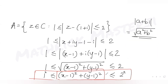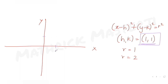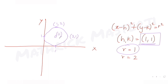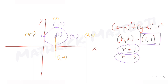Both circles have the same center (1, 1), so these are concentric circles. Plotting the center at (1, 1), the inner circle of radius 1 passes through (2, 1) and (1, 0). The outer circle of radius 2 passes through (1, -1), (1, 3), (3, 1), and (-1, 1), giving us the outer circle.